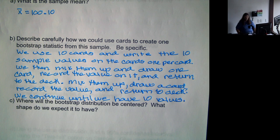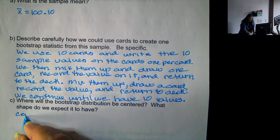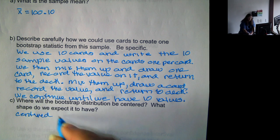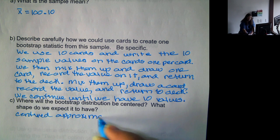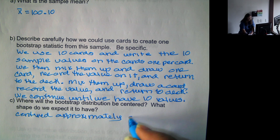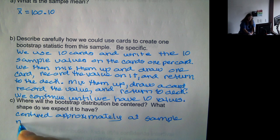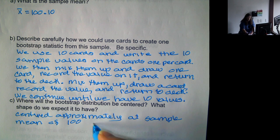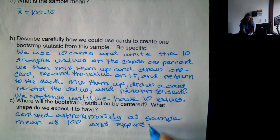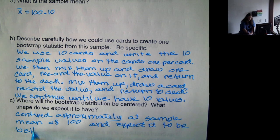So now, where would the bootstrap distribution be centered and what shape do we expect it to have? It's going to be centered approximately at the sample mean of 100 and we expect it to be bell-shaped.